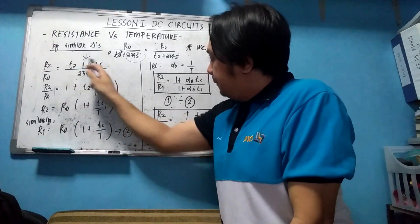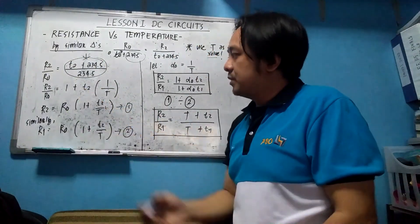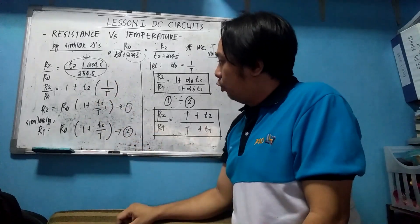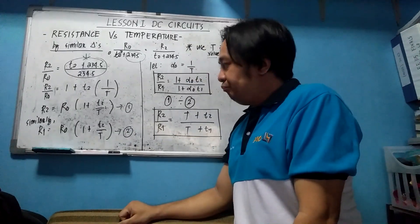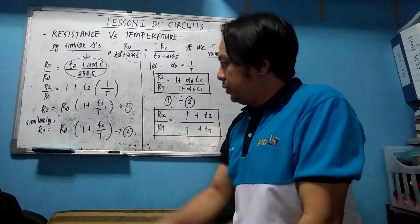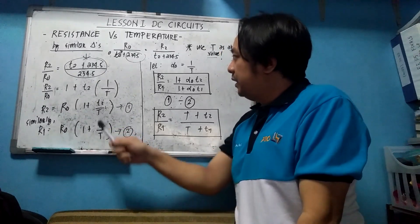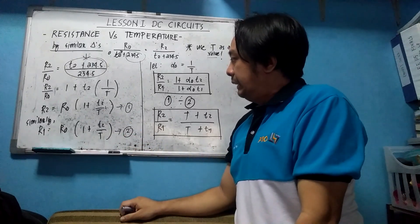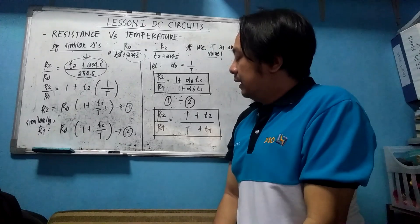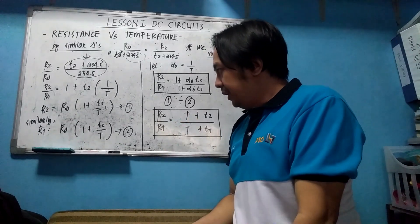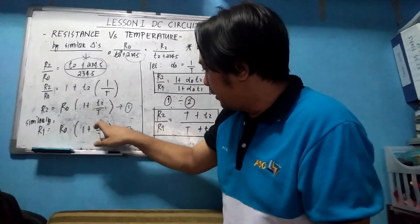Simplifying further, this becomes 1 plus T2 times (1 over T). Rearranging, we get R2 = R0 multiplied by (1 + T2/T), where T is our inferred temperature zero resistance constant. Similarly, using the relationship of R1 with respect to R0, we get the same form with T1 substituted.